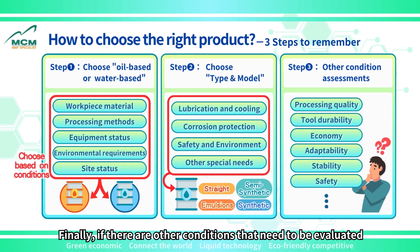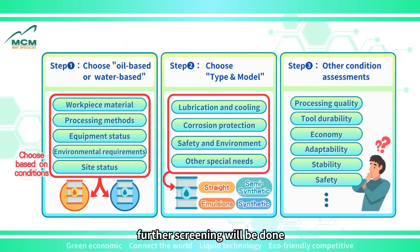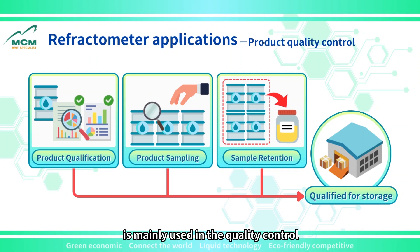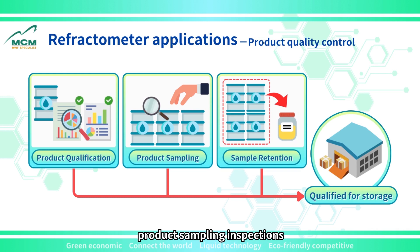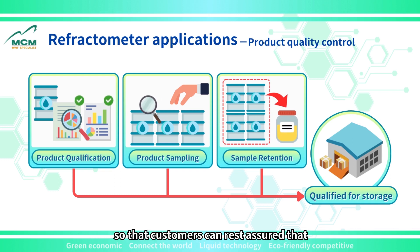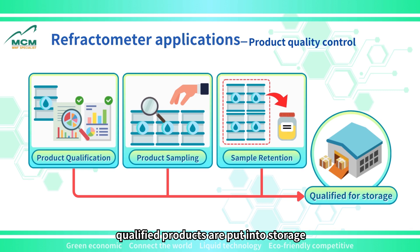Finally, if there are other conditions that need to be evaluated, such as processing quality and tool durability, further screening will be done. The index value of the refractometer is mainly used in quality control, such as product factory qualification reports, product sampling inspections, and product batch sample retention, in order to evaluate the stability of the product so that customers can rest assured that qualified products are put into storage.